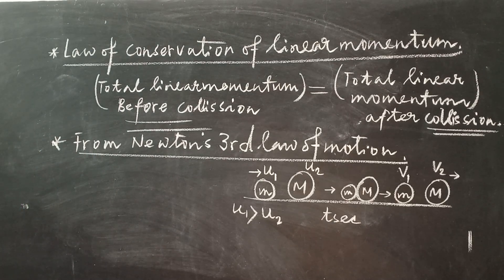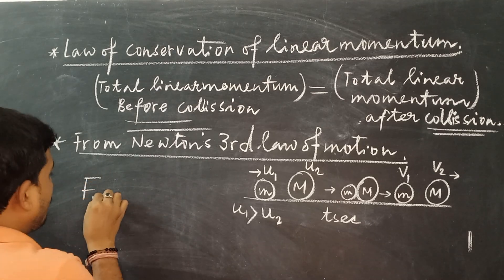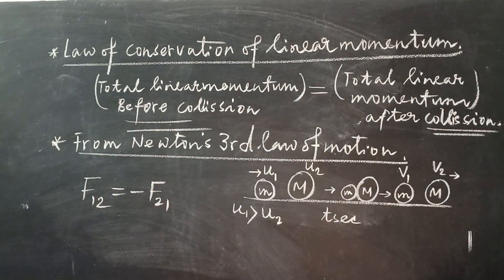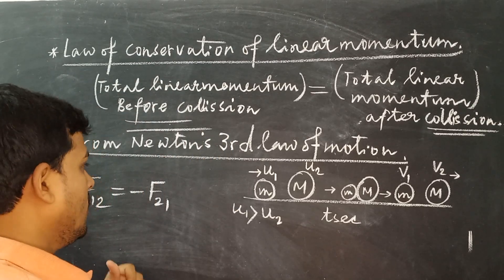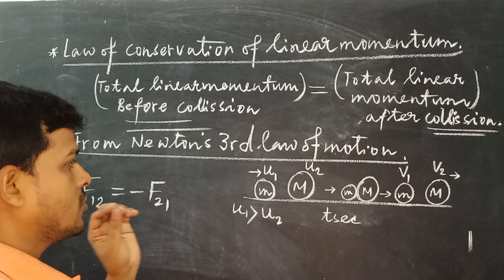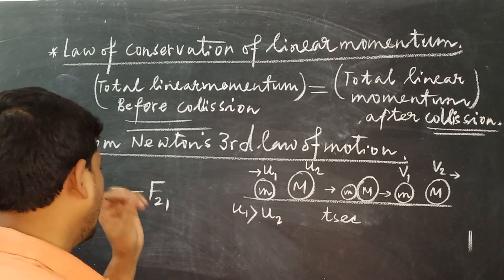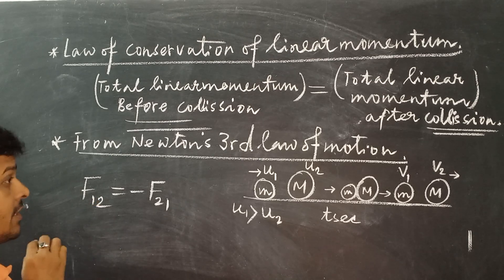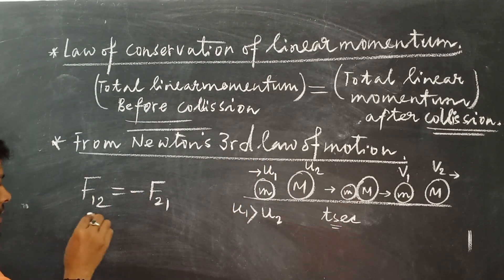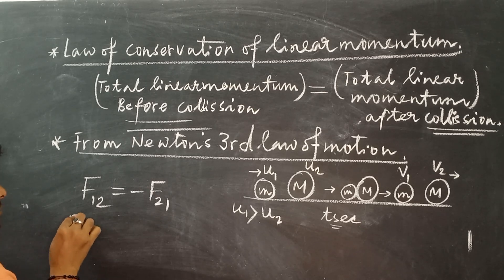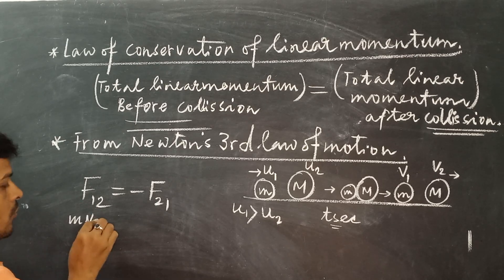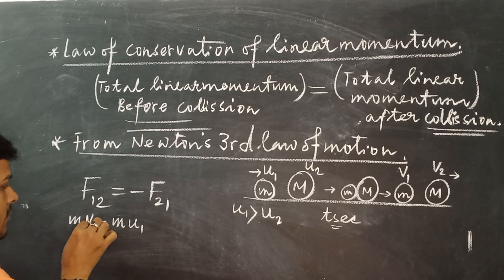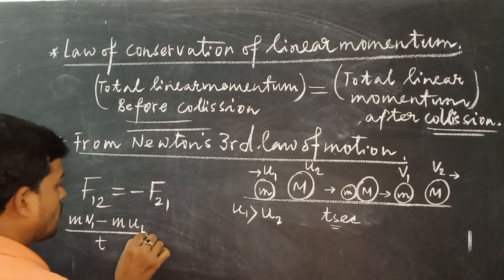According to Newton's third law of motion, we can write f12 = −f21. So we can calculate the change of momentum for both bodies — for mass m and for mass capital M. For mass small m, the rate of change of linear momentum in time t is: (mv1 − mu1) / t.